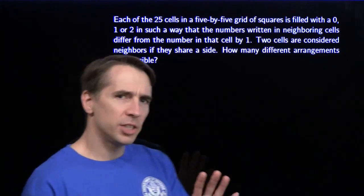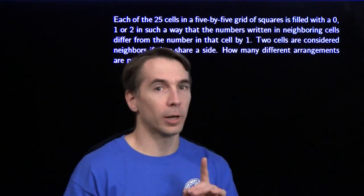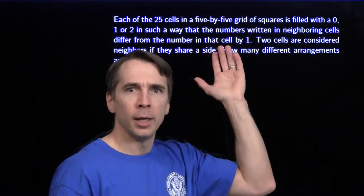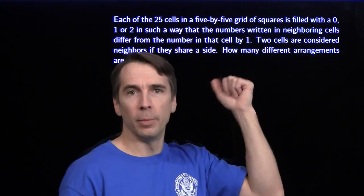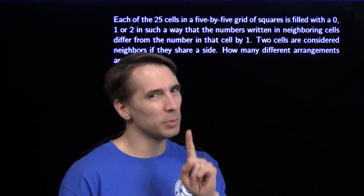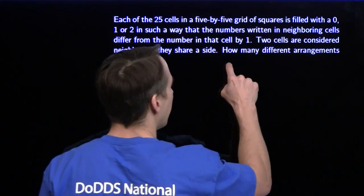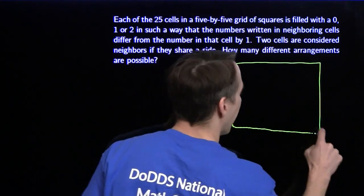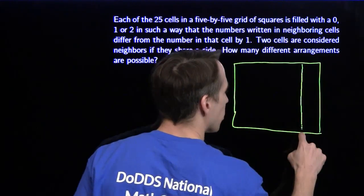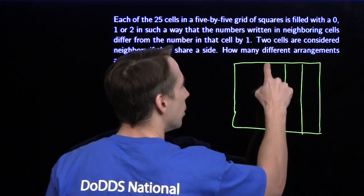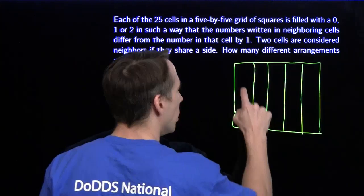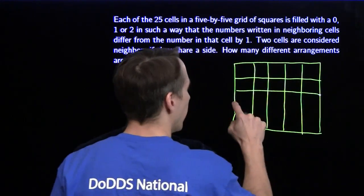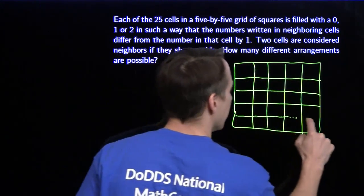I'm going to take a strategy here I call constructive counting. What I'm going to try to do is make one of these things that we're trying to count, and hopefully that'll help me understand the problem and it might even help me solve it. So we start off by drawing a five by five grid of squares and then we're going to try to fill it up with zeros, ones, and twos in a way that satisfies the conditions given in the problem.